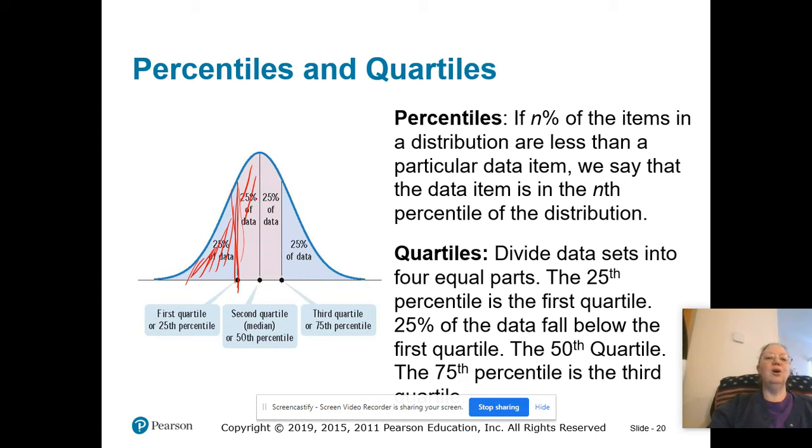So then the next quarter of the data items. But remember, we want the items below. Yes, we went up another 25%, but that means we're at the 50th percentile. We've already talked about these 25%, now we have 25% more, and altogether we're at the 50th percentile. So the second quartile is the same thing as the 50th percentile.